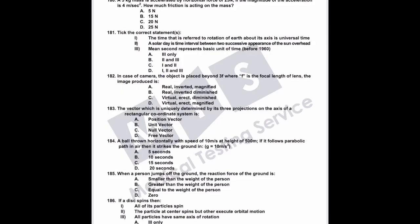Question 181: the time referred to the rotation of Earth about its own axis is called universal time — correct. A solar day is the time interval between two successive appearances of the sun over it — correct. The mean solar day is the average over the whole year, because solar day duration varies between winter and summer.